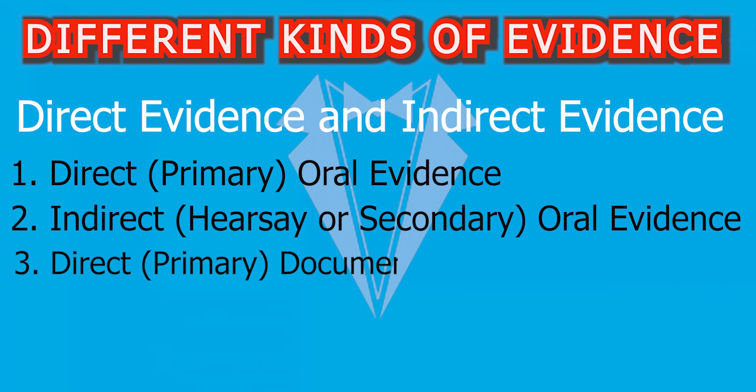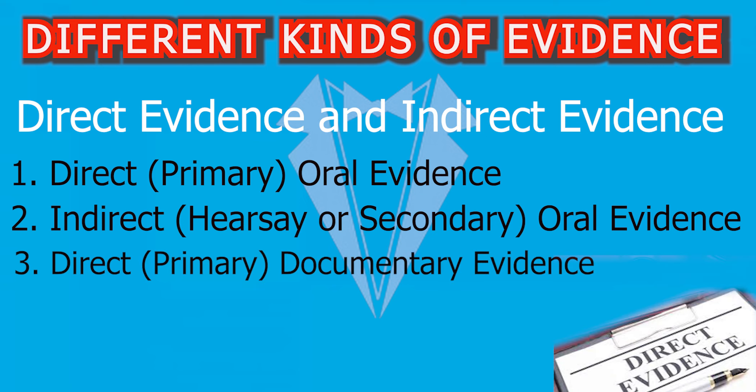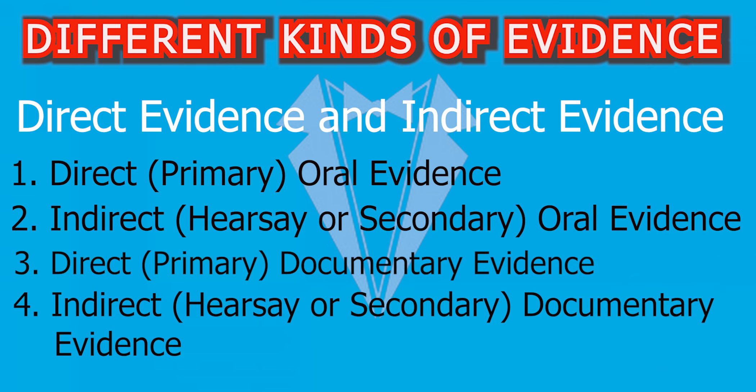Direct or primary documentary evidence: the document itself serves as direct proof of a fact without the need for extraneous evidence, and its content directly supports a fact in question. For example, a signed contract that directly proves the terms agreed upon. Indirect or secondary documentary evidence: the document is introduced to prove the truth of its contents, but those contents are based on statements made by someone who is not a witness in the case, which may raise issues of credibility and reliability. An example is a letter containing statements made by a third party about an incident.